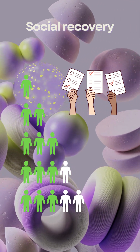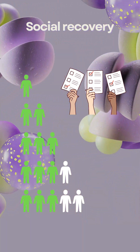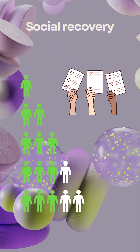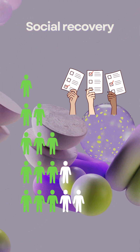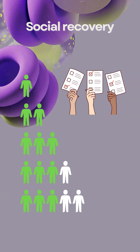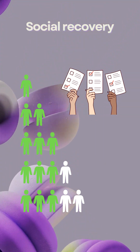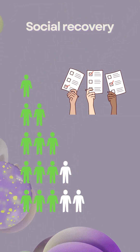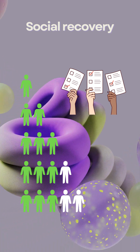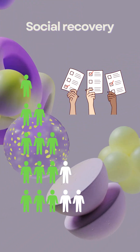For instance, with one Guardian account set up, loss of wallet access prompts seeking assistance from the Guardian for recovery. With two accounts set up, approval from both is necessary. With five Guardians, three out of five approvals are required.